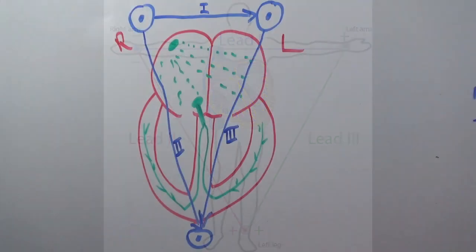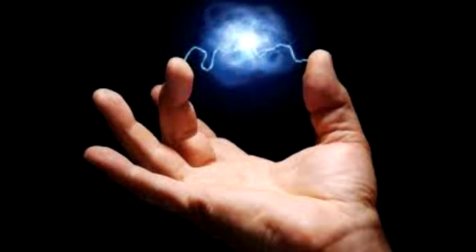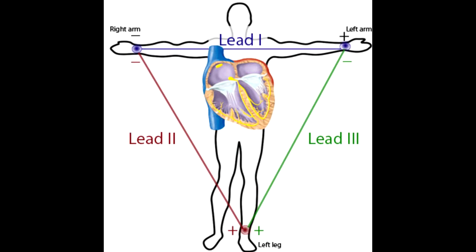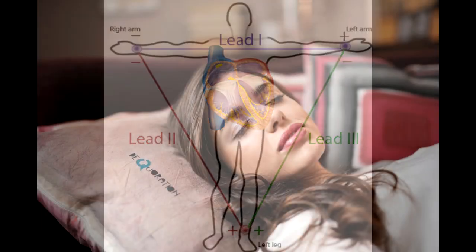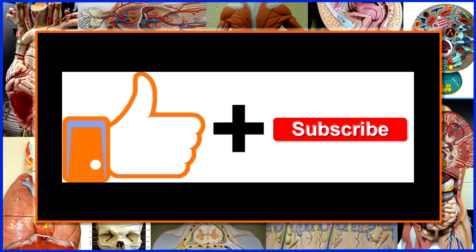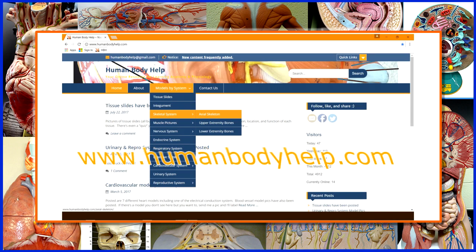The reason the electrocardiograph still works is that the body is a conductor of electrical current, so you can detect the heart electrical activity even out at the wrists and ankles. You have to make sure the patient lies quietly, however. Otherwise, you're going to pick up the skeletal muscle activity as well. This would obscure the heart muscle activity, making it difficult to see and assess. If you found this video helpful, click like and consider subscribing to my channel. Don't forget to visit www.humanbodyhelp.com.